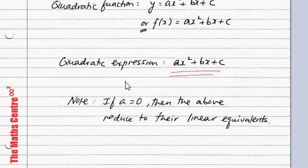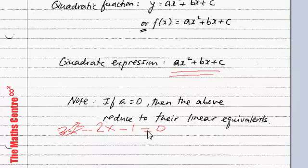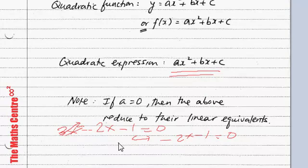Please remember that if a equals to 0, then all of the above — whether equations, functions, or expressions — are all reduced to their linear equivalents. For example, if you have 3x squared minus 2x minus 1 equals to 0 and a is 0, the x squared term disappears, and you're only left with minus 2x minus 1 equals to 0, which is a linear equation. That's what I mean by reducing to linear equivalents.